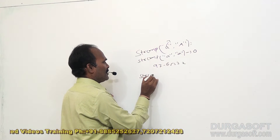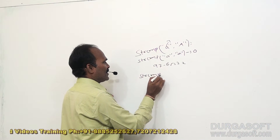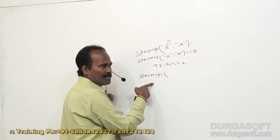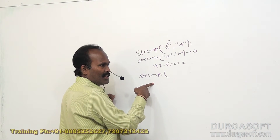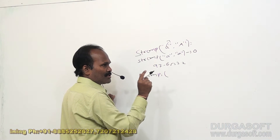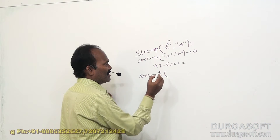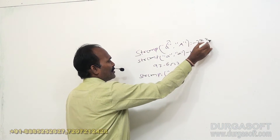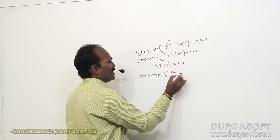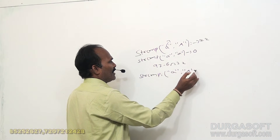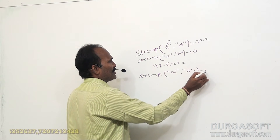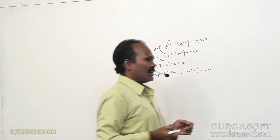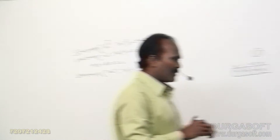For case-insensitive comparison, we use another function called strcmpi. This function compares strings without looking at case sensitivity. So if you give strcmpi of small 'a' and capital 'A', it returns zero instead of 32.